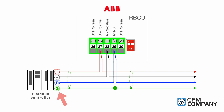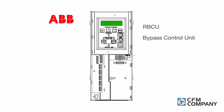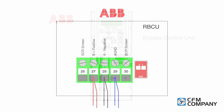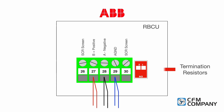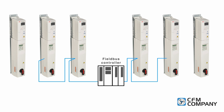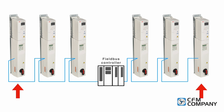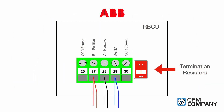The wire shield should be twisted together and taped to prevent contact with other conductors. Terminate the shield only at the ground terminal in the building automation controller. The bypass control unit, RBCU, includes a dip switch used to configure the serial communications termination resistors. To reduce noise on the serial communications network, terminate the EIA-485 network using 120 ohm resistors at both ends of the network. Use the dip switches to connect or disconnect the onboard termination resistors. Both switches must be positioned in the on or off position to correctly configure the termination resistors.